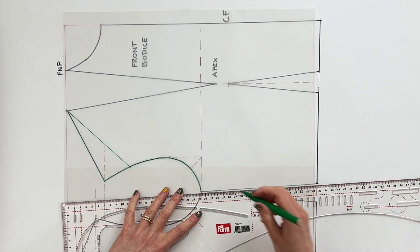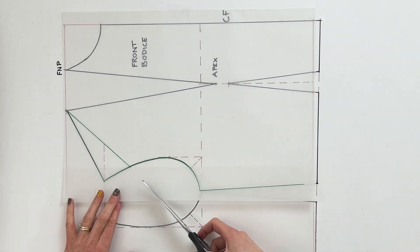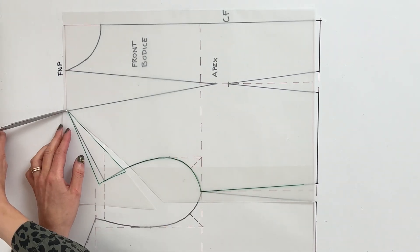I'm also just going to drop in the side seam. Cut through the slash line you've just drawn up to that point and then just snip in to pivot that point.